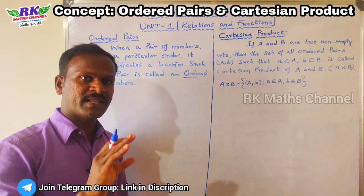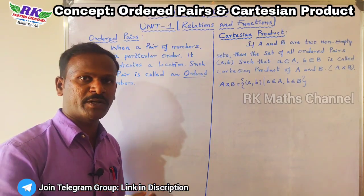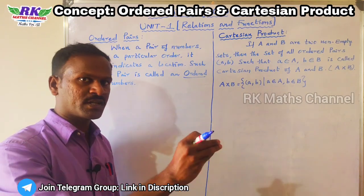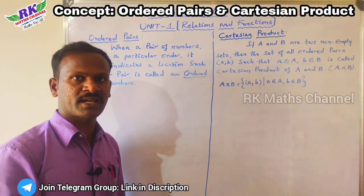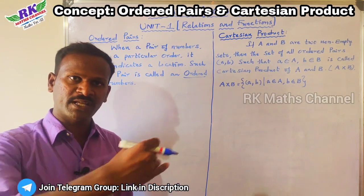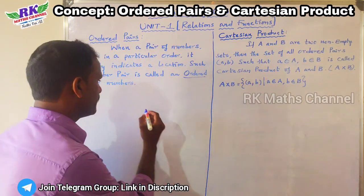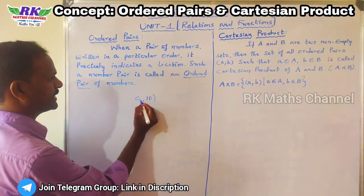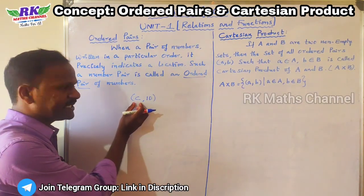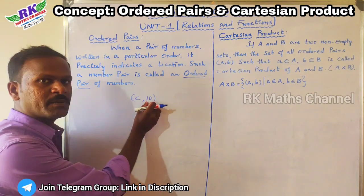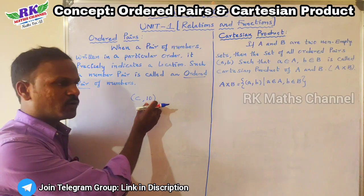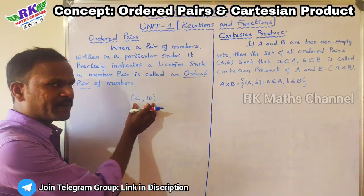For example, when you book a movie ticket, you can see the seat. There are rows: A row, B row, C row, D row. For example, C,10 — to get the location, you go to the C row and 10th seat. That is an example of an ordered pair indicating a location.